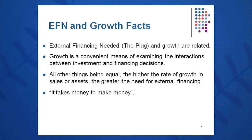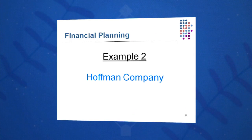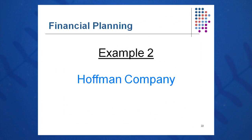How much of a plug will be needed in the Huffman example? In Rosengarten it was $565 if we wanted to grow at 25%. If you want to grow faster, it will take more of a plug — more external financing needed. Hence the old adage, it takes money to make money. Let's look at Huffman Company now.